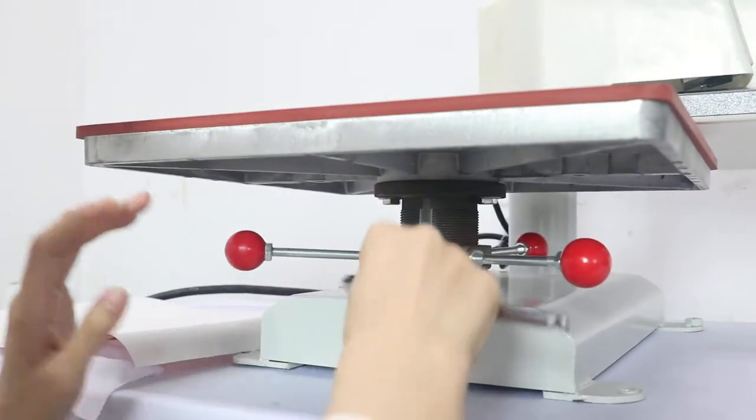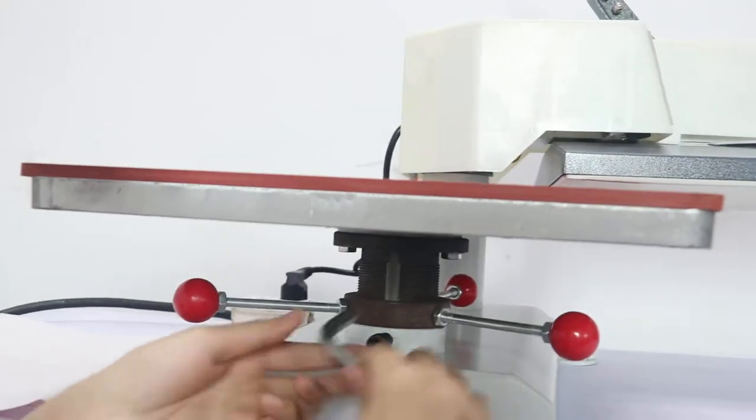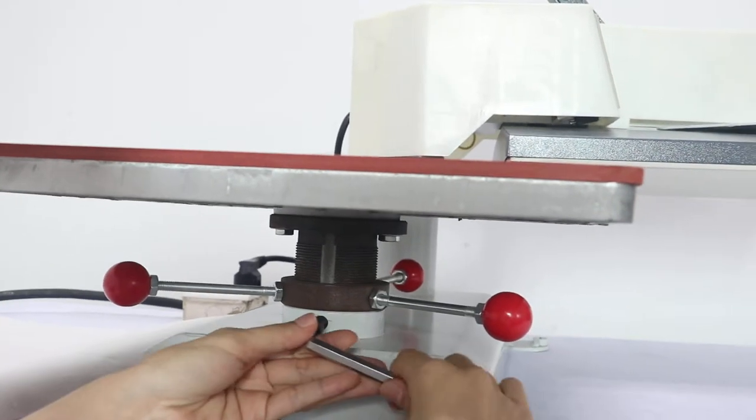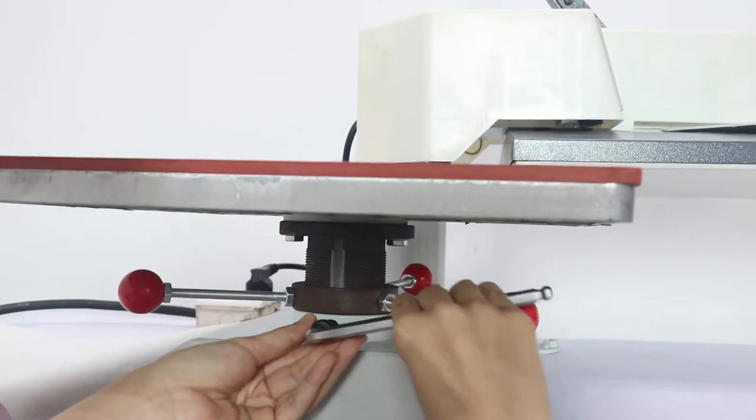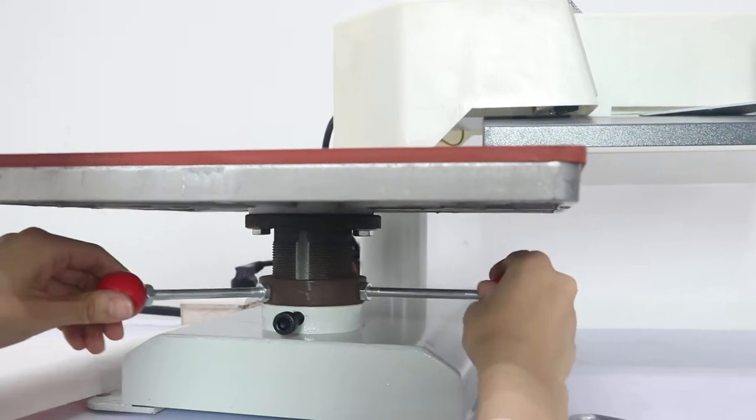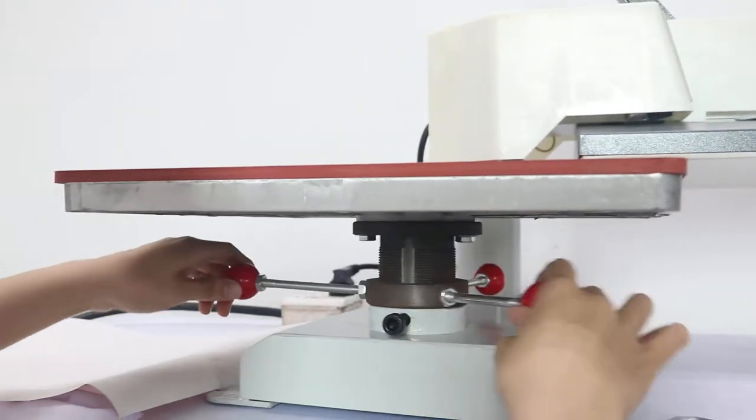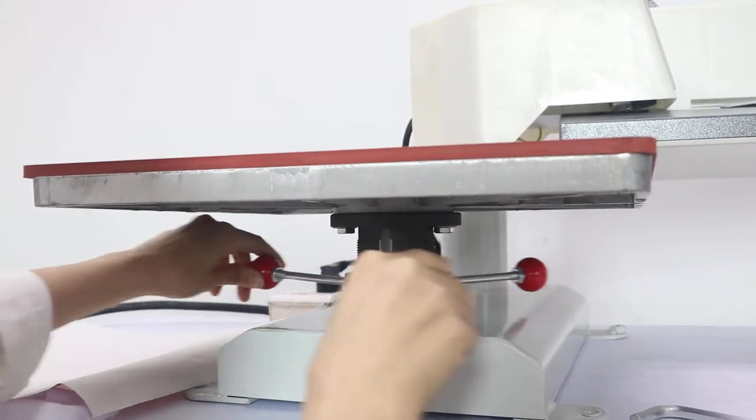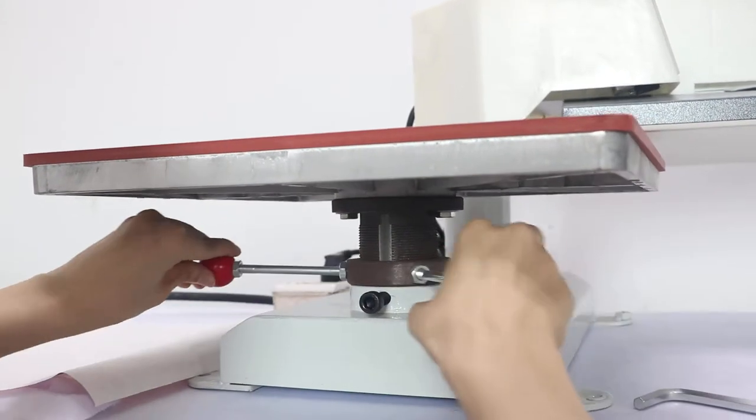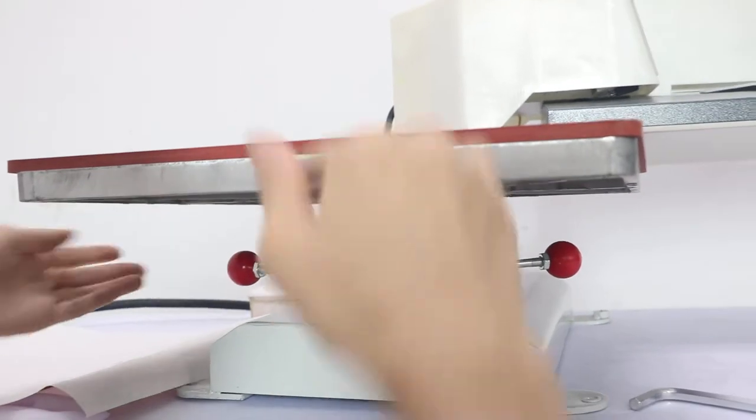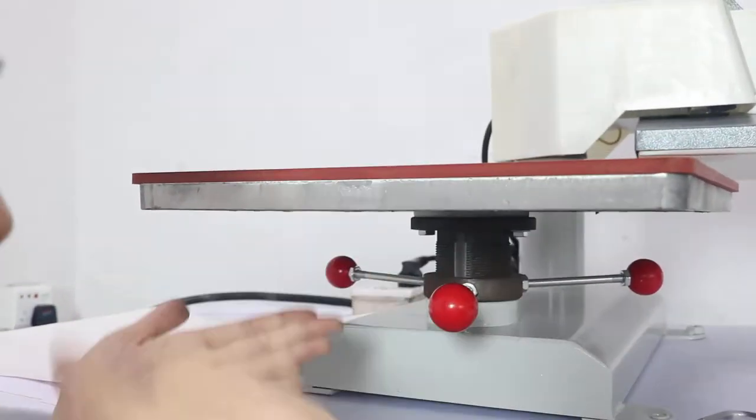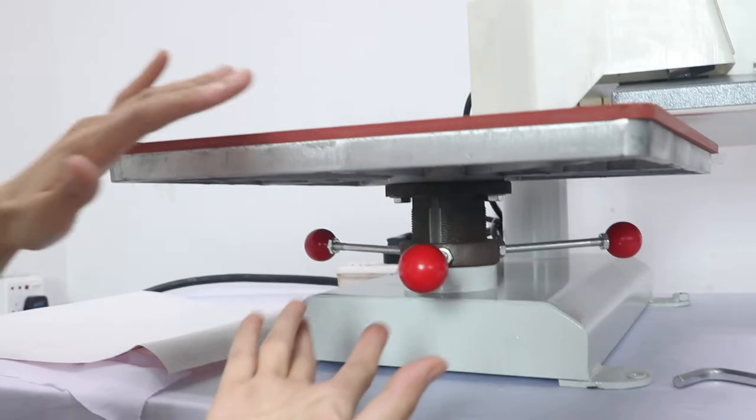First we have to tell you how to adjust the pressure. First we need to loosen this button. By turning anti-clockwise this button, you can see it can move. This is the pressure adjustment. If we turn clockwise, the pressure will be decreased. You can see the bottom plate will just fall down, so the pressure can be decreased.